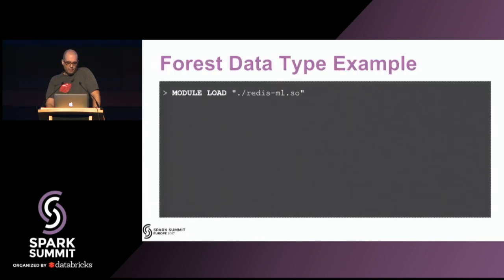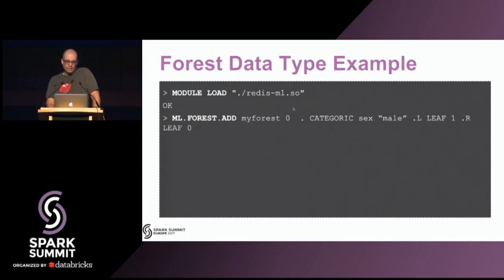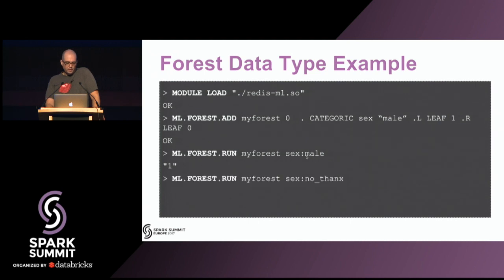Here is the API example. You load the module into Redis — modules can be loaded at runtime using a command, or preferably via the Redis configuration file. Then you create a forest, add nodes to it with certain decision points and their outcomes. This one just evaluates one feature, then you run the forest. With one tree and one feature, you run the forest against the feature vector and get the classification. Extend that to many trees, many forests, many features, and you can see where this is going.